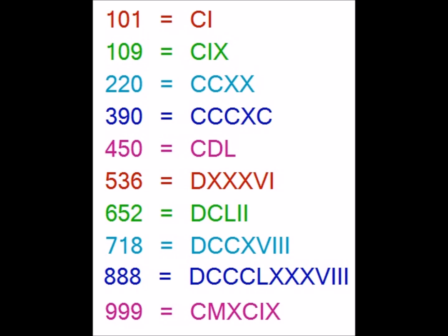Now let's construct the remaining numbers. For example, for 101 we use C for 100 and append I, so CI gives 101. In general, we use the numbers 1 to 99 and append them to the hundreds we just covered — 100, 200, etc. — to get the remaining numbers.